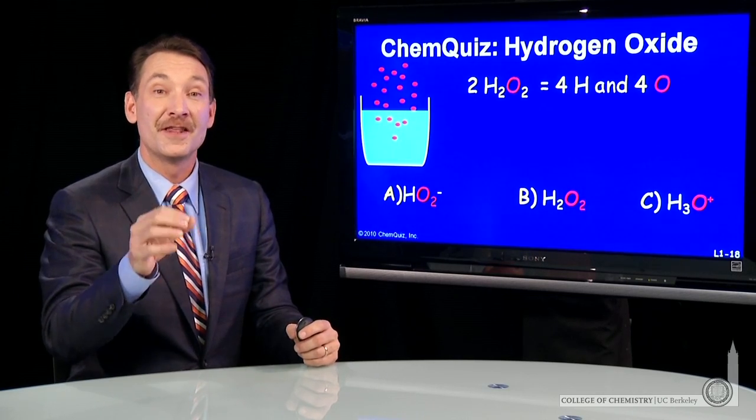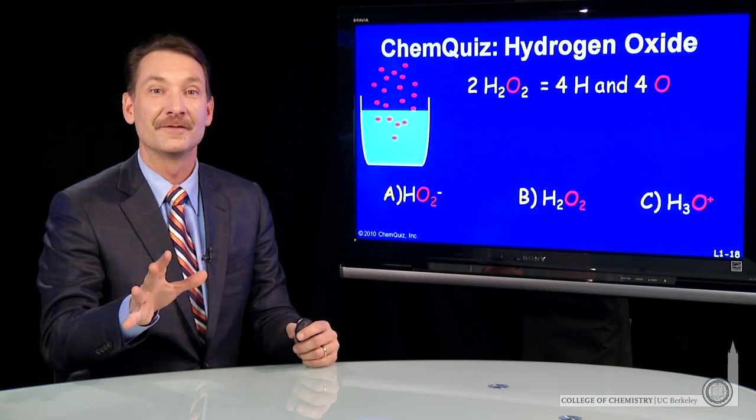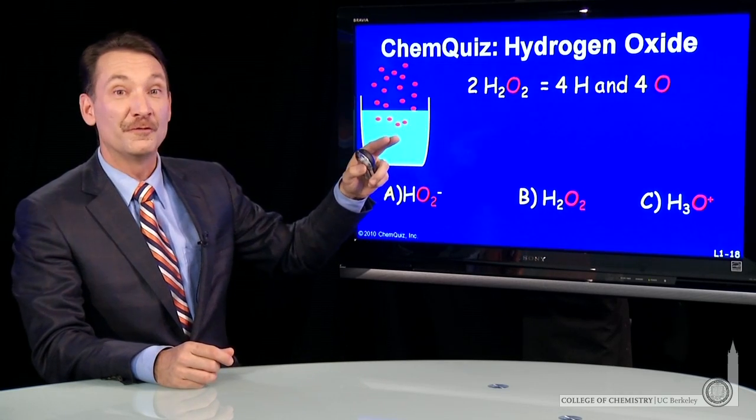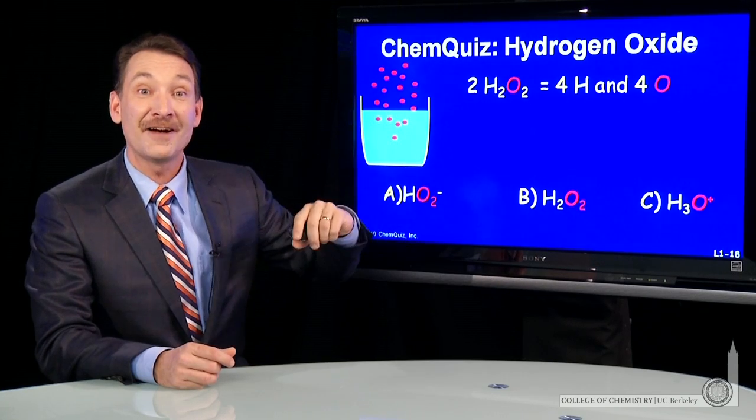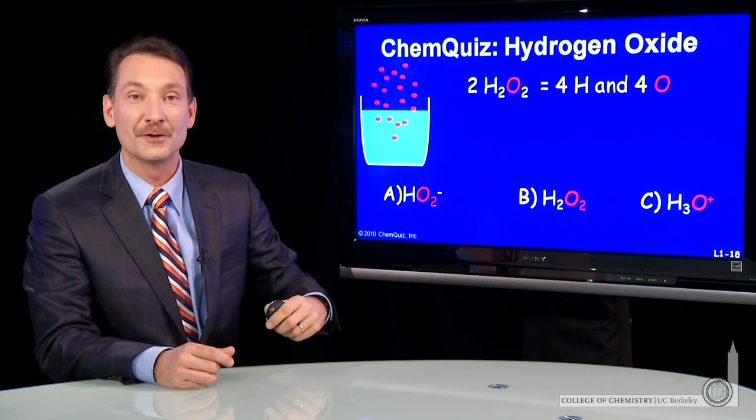When a chemical reaction occurs, the numbers and kinds of atoms have to be conserved. So if I'm going to make H2O2, for instance, into water and oxygen, I have to have enough hydrogens and oxygens to form those molecules.